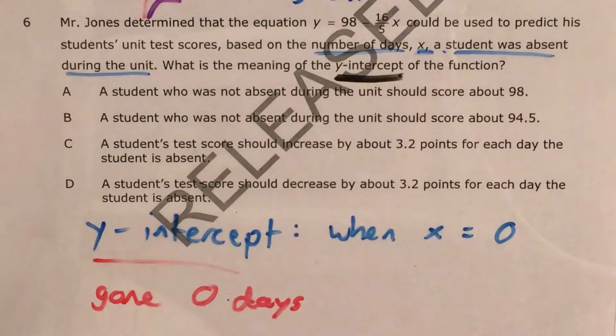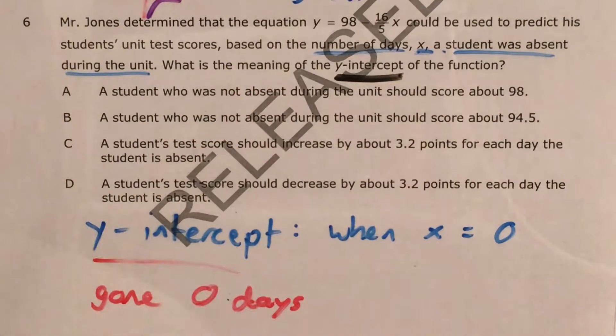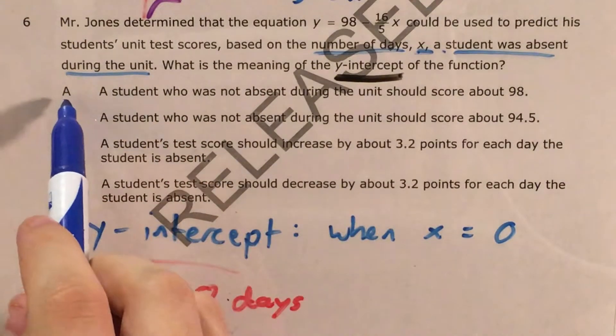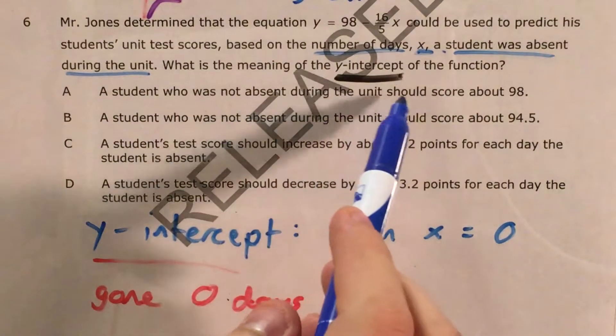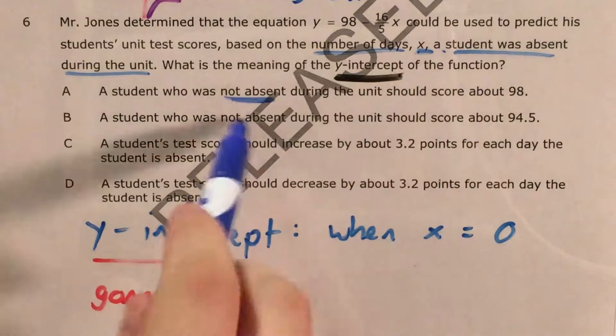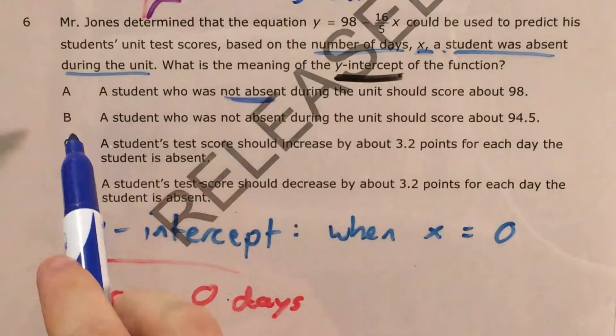So with that information, let's go ahead and look at our answer choices and see which one best matches this idea that the y-intercept is what happens when a student is gone 0 days. So for choice A, a student who was not absent during the unit should score about 98. Okay, not absent is a good sign. Gone 0 days, not absent. That's pretty close phrasing.